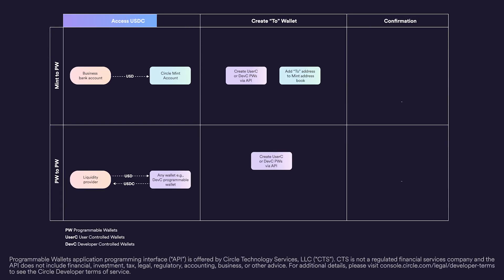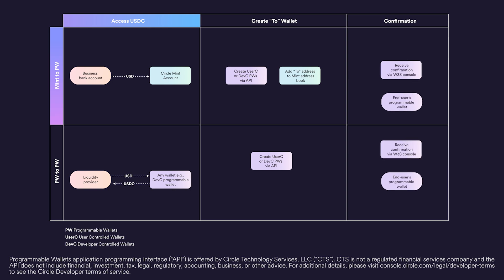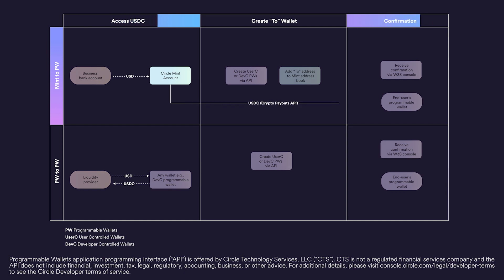So, after you've secured access to USDC, the next step is distribution. If you have access to a CircleMint account, you can directly distribute your USDC to your users' wallet — either their user-controlled wallet or developer-controlled programmable wallet — depending on the specific compliance requirements for your product. For this operation, you can use the Circle Crypto Payout API.